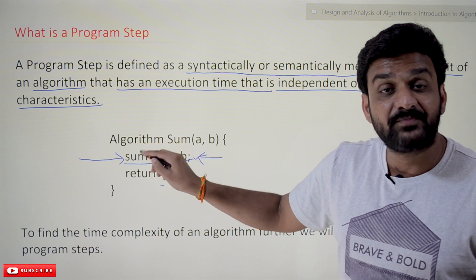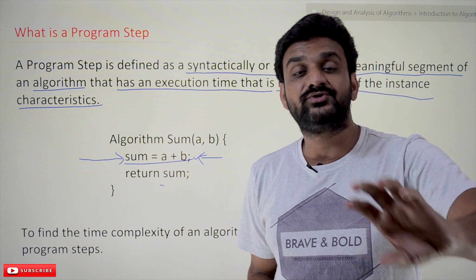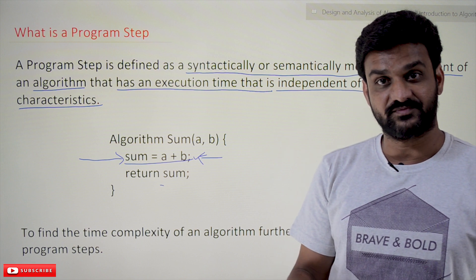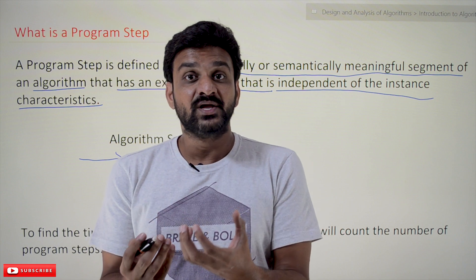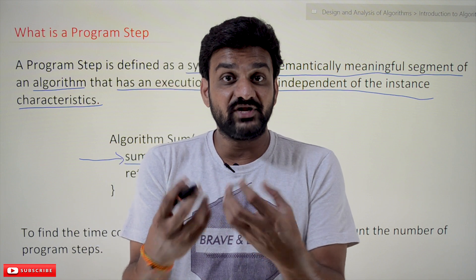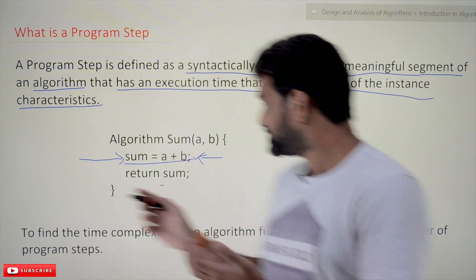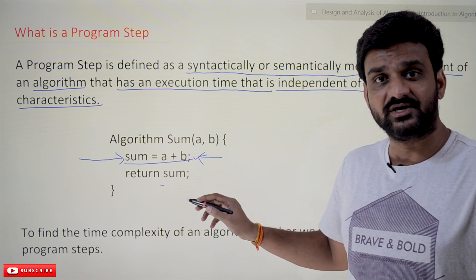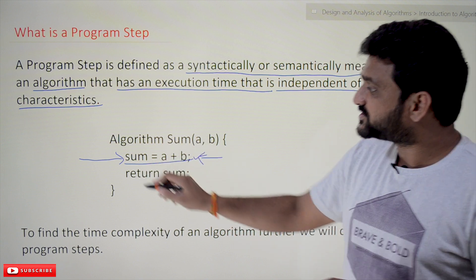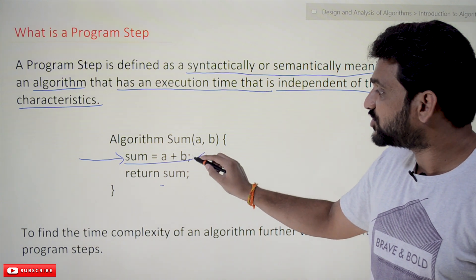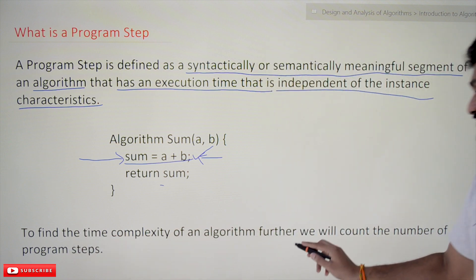In order to find the time complexity of an algorithm, we are going to consider the count of program steps. As we have seen, the evaluation of an algorithm cannot be judged by many different factors like instance characteristics. So in order to find the time complexity of an algorithm, we are going to consider only the program steps.